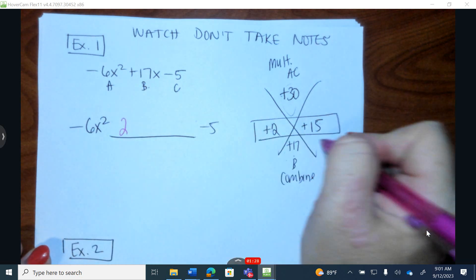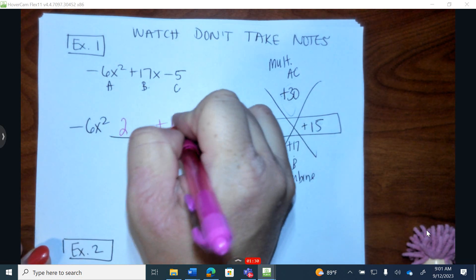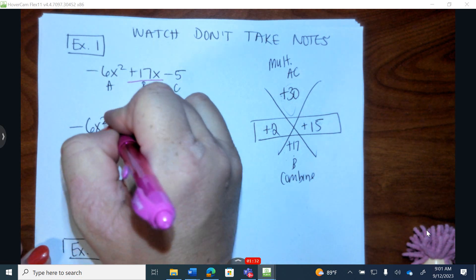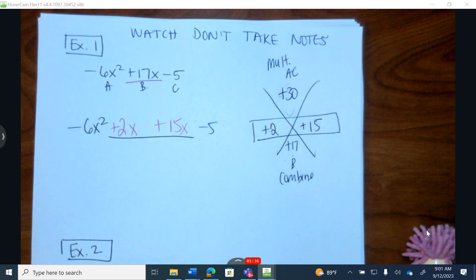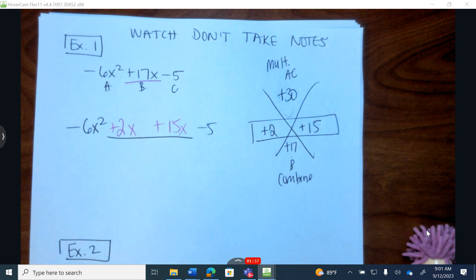Now in this position, I'm going to write down these two numbers. And when I write these down, these two have to add up to 17x. So do not forget to put the symbols, plus 2 and plus 15, with x's behind. These two have to add up to 17x.